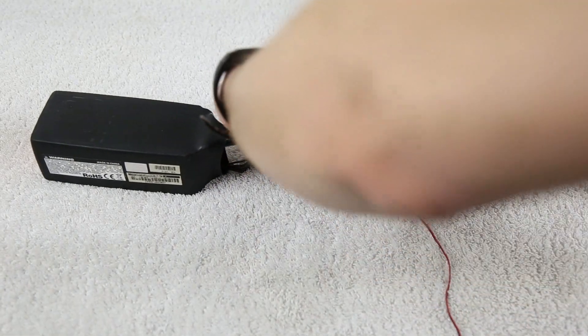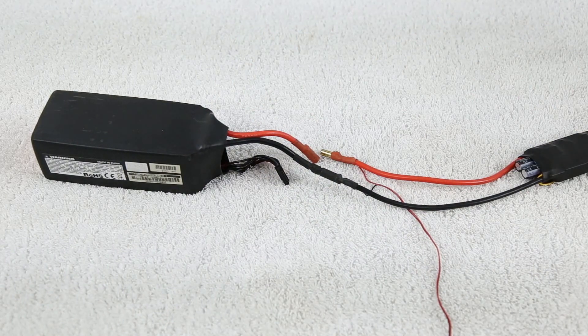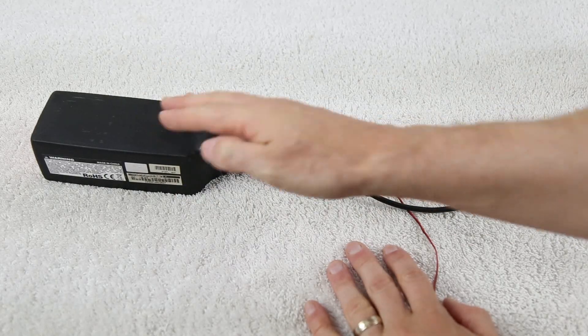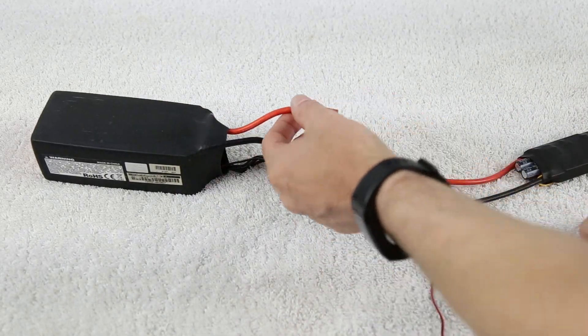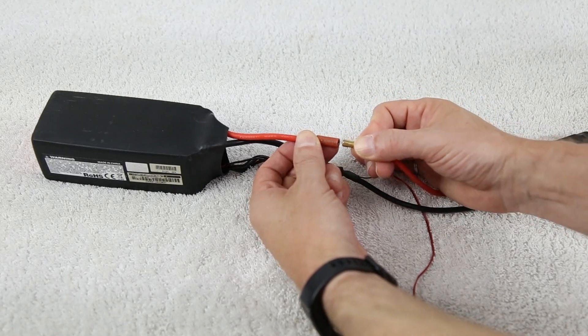Now what we're gonna do is we're gonna unplug our positive lead here and we're going to do things in the opposite order. We already have now our negative lead connected up to our battery pack. Let's go ahead and plug our positive lead into our speed control.